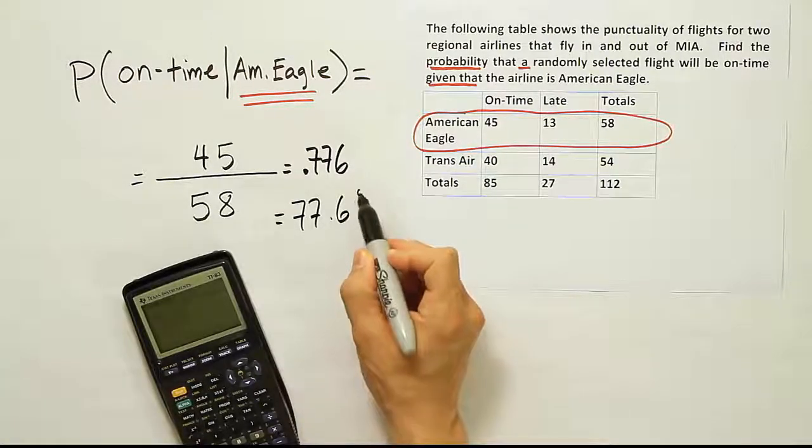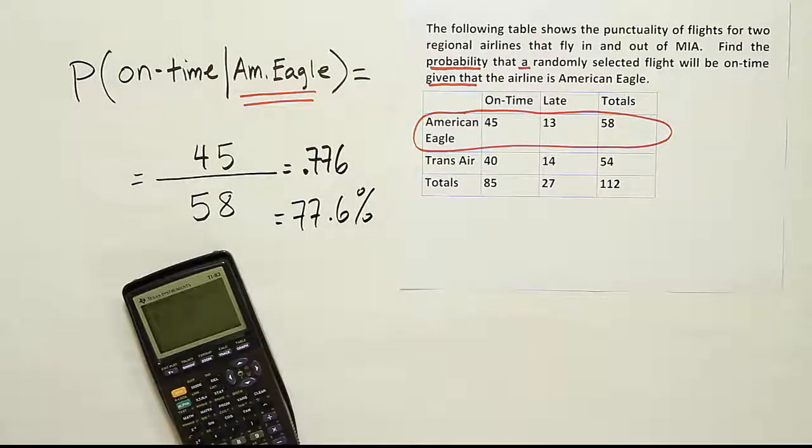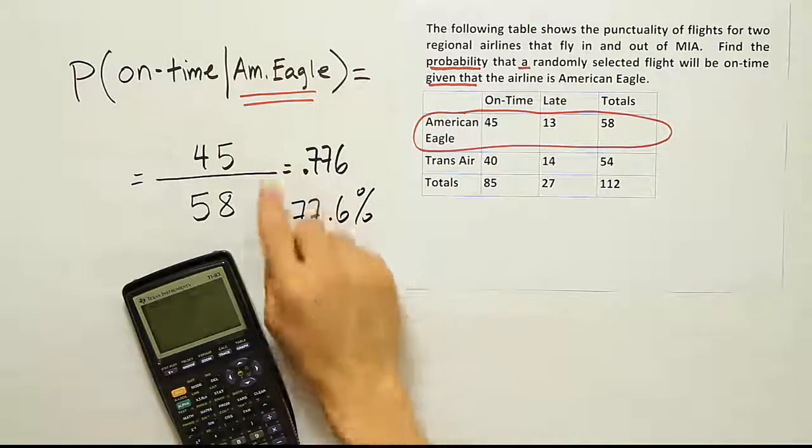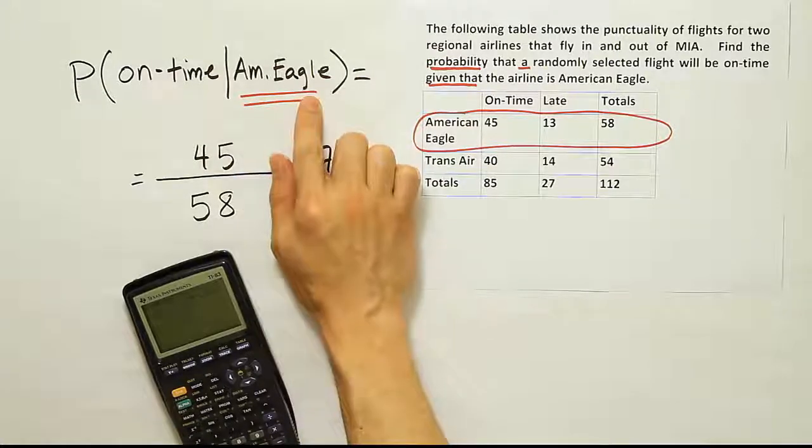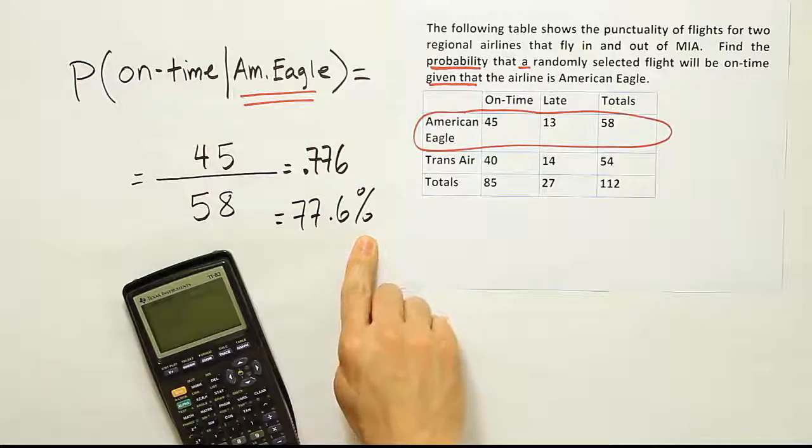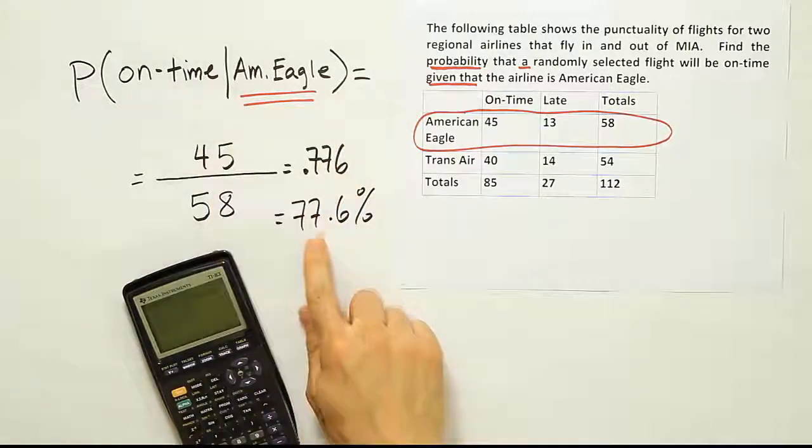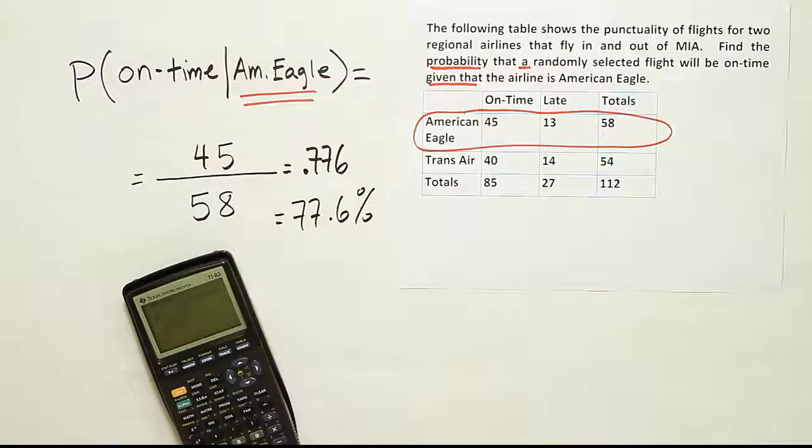77.6% of the flights from American Eagle be on time. Okay, so again, how do you interpret this number? We say, given that it's an American Eagle flight, the probability that it's on time is 77.6%. So you know it's an American Eagle flight, and you're asking what's the chance that it'll be on time? That chance is 77.6%.